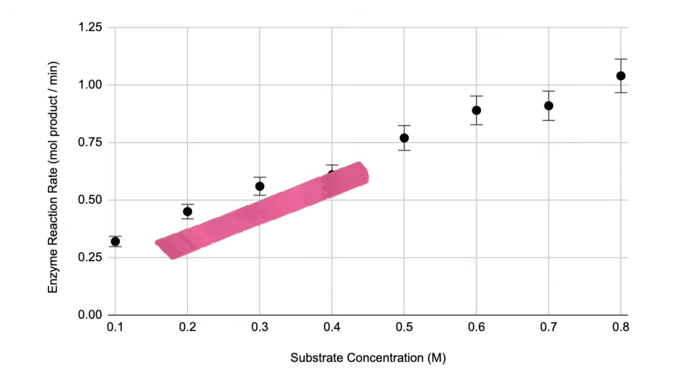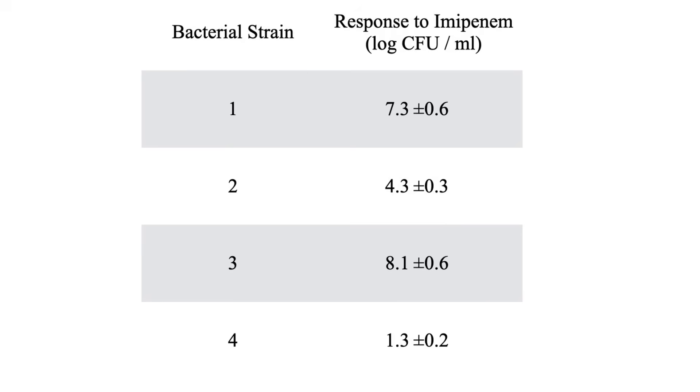The creation of a regression line could even give you a linear function that could be used to estimate the dependent variable given an input value for the independent variable. Next, let's take a look at an example of when a bar graph will be appropriate. In this example, we see that we're looking at four strains of bacteria and their response to a particular antibiotic. Because the four strains of bacteria are not continuous, but rather a discrete or categorical piece of information, we would use a bar graph.